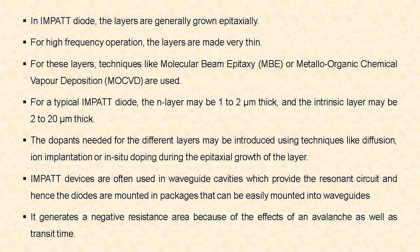The techniques used for growing these layers are molecular beam epitaxy or metallo-organic chemical vapor deposition. For a typical IMPATT diode, the N layer may be 1 to 2 micrometers thick and the intrinsic layer is 2 to 20 micrometers thick. The dopants needed for the different layers are introduced using techniques like diffusion, ion implantation, or in-situ doping during the epitaxial growth. These devices are often used in waveguide cavities which provide the resonant circuit, and the diodes are mounted in packages that can be easily mounted into the waveguides. It generates a negative resistance area because of the effects of avalanche as well as transit time.